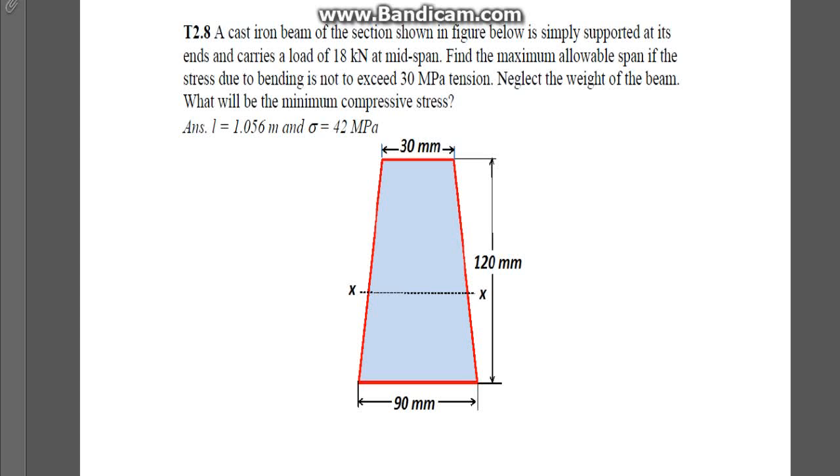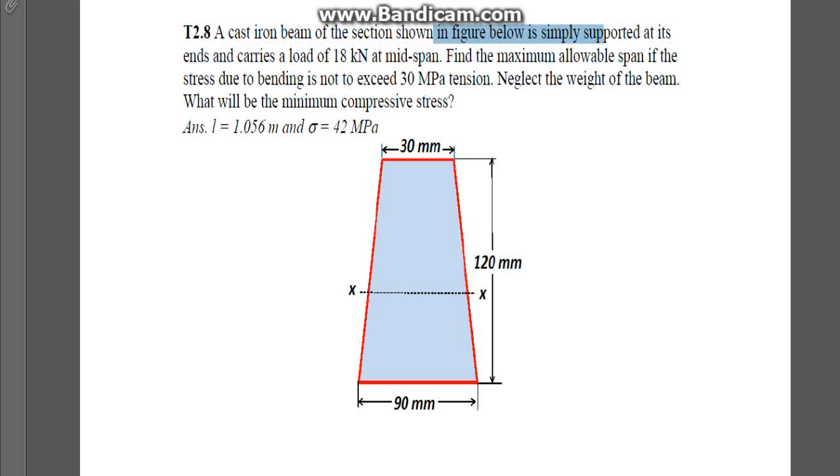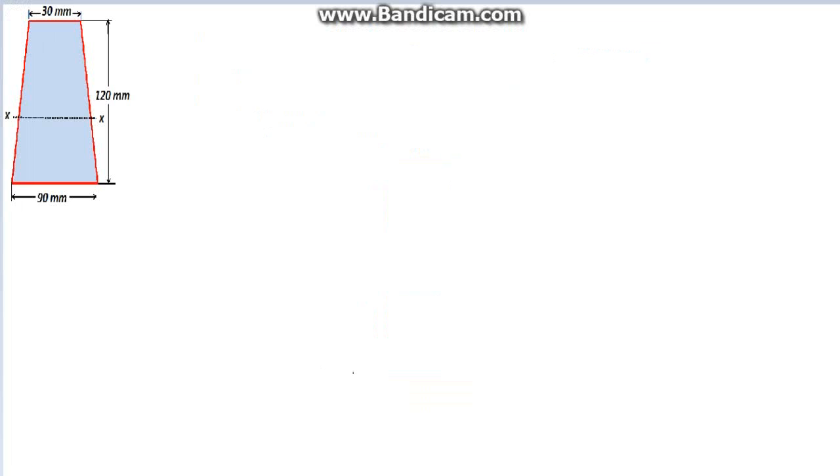So let's jump right into it. Before we jump into it, let's just look at this question for a second and ignore the cast-iron and the figures and other words, and just look at this: simply supported at its ends and carries a load of 18 kN at the mid-span. That is basically telling you how to draw the actual beam itself. So let's first get this part done. Let's draw our own shear force diagrams, bending moment diagrams, and treat this as if it was asking that. In the end, you do need to do that to actually answer the question.